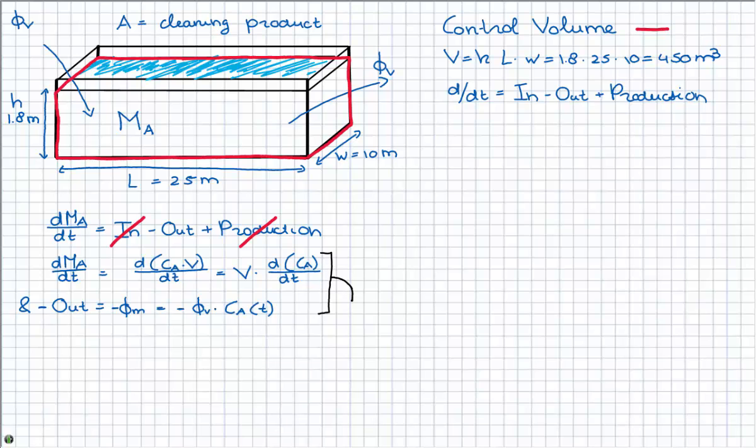Now, as you know, the units have to be right, so you can check it later. Now, we can use separation of variables to solve this. This is some mathematics, but not too difficult, so I can write this out. And then I have the dCA/dt term, and the outflow term.